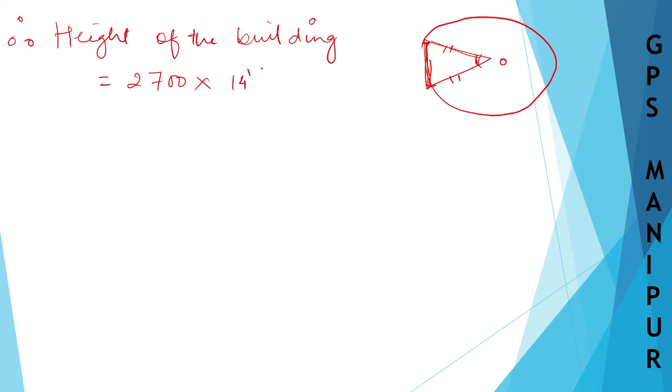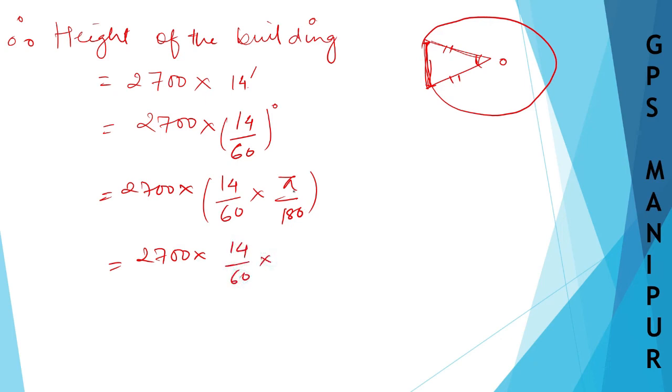It will be like this: 2700 times 14 minutes. You convert into radians. First you convert into degrees. This is degrees, right? So 2700 times - you convert degree into radians - 14 by 60 times π by 180. For π, I hope you know what is π. 14 by 60 times π - π is 22 by 7 - so 22 by 7 times 1 divided by 180. Instead of π we are writing 22 by 7.